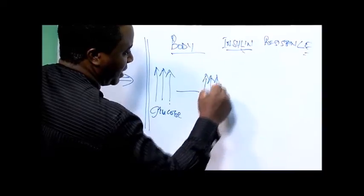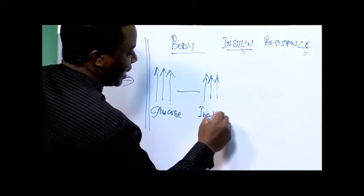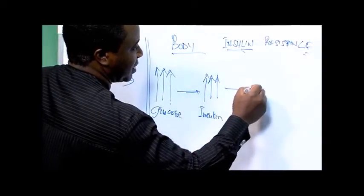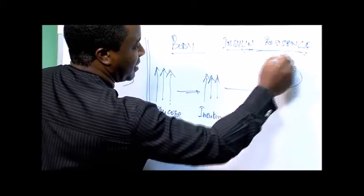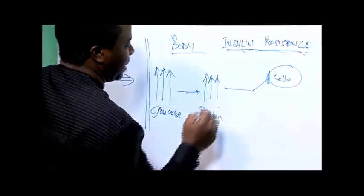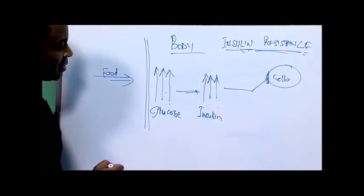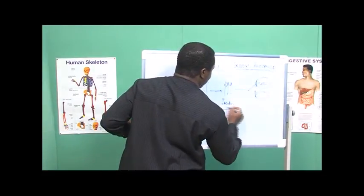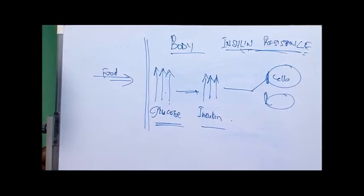In type 2 diabetes, insulin is actually produced to drive the sugar into the cells. However, because of insulin resistance right up here, it doesn't get into the cells. So what happens is that you have high levels of glucose and high levels of insulin both coexisting. This creates a problem.